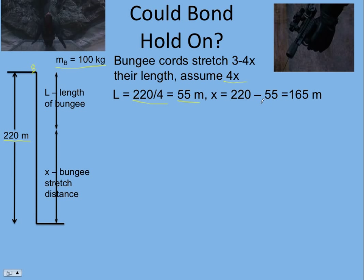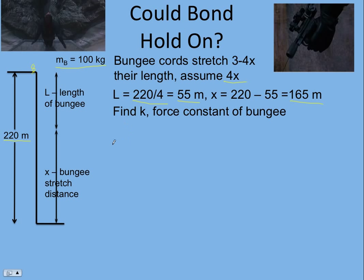Subtracting 55 from 220 gives us the stretch distance of 165 meters. Now we can use conservation of energy to find the force constant of the bungee. We'll assume the bungee obeys Hooke's law — in other words, the force is linear with the stretch distance.